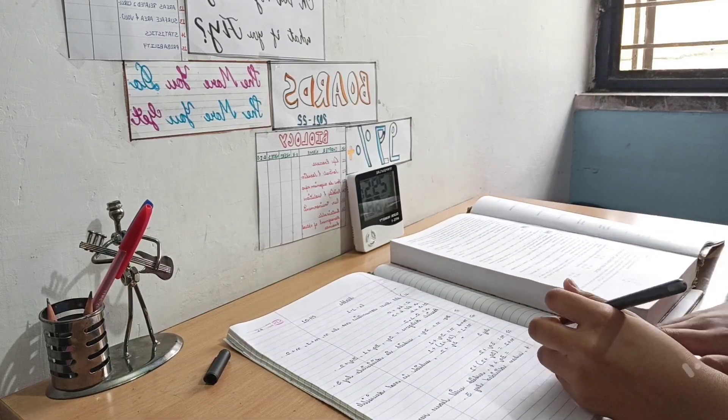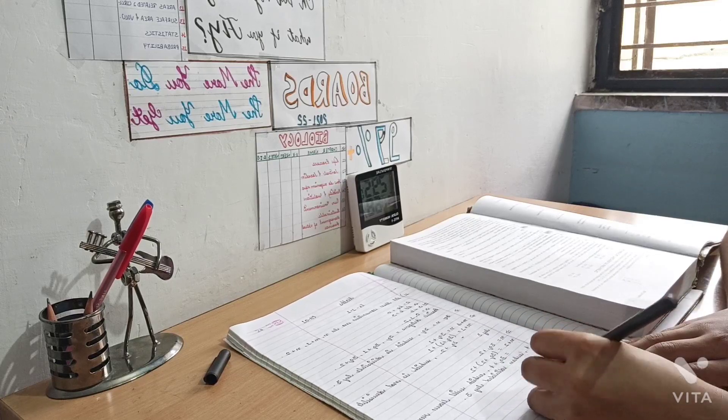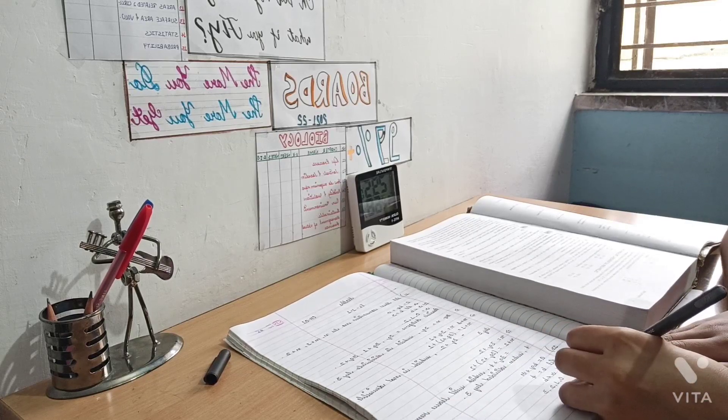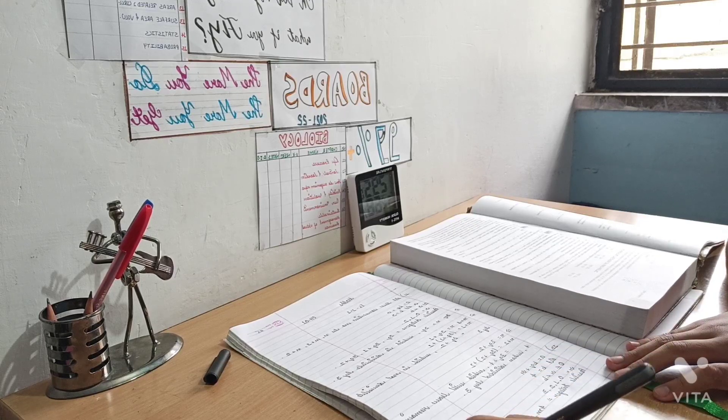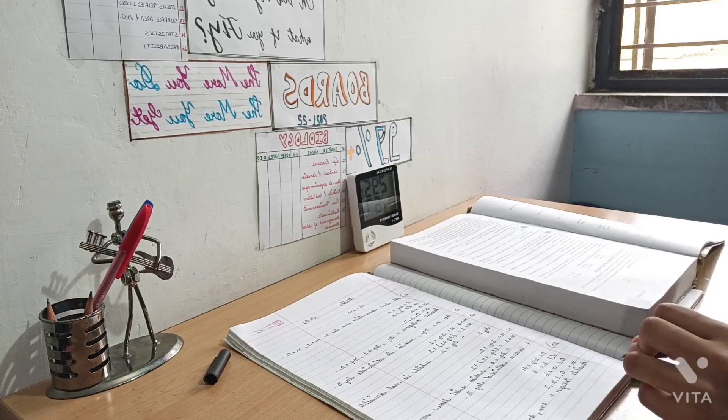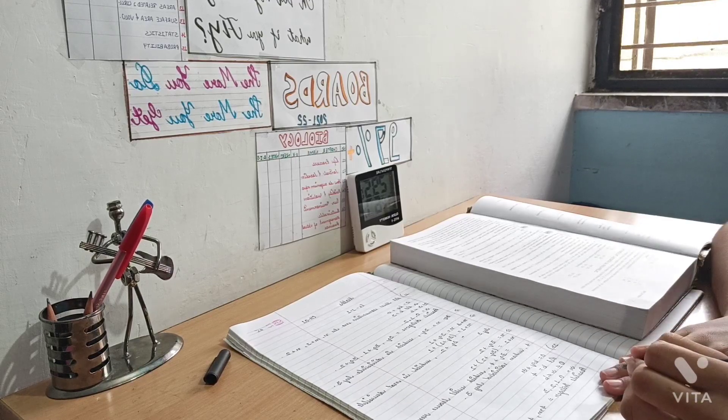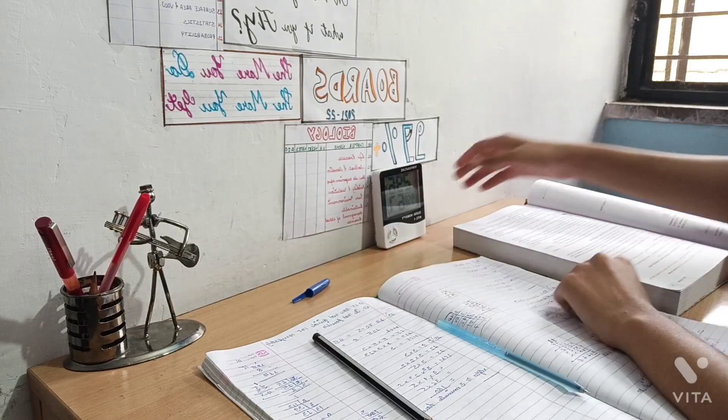So when I'm practicing maths, I circle out or take out the questions which I'm not able to solve the first time. So when I'm doing revision I just go through those questions, I practice them and it saves a lot of my time and it also prepares me well for the examination. Now it's been one hour.